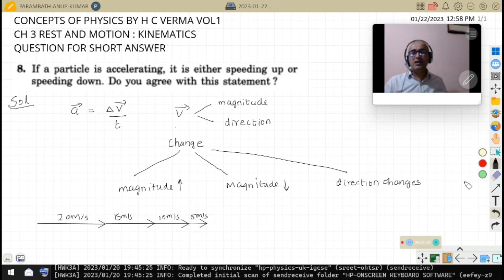Whereas speeding up is the increase in magnitude. Say this is 5 meters per second, it has increased to 10 meters per second in the next second, it has increased to 15 meters per second in the next second, and then it has increased to 20 meters per second in the next second. This is speeding up.